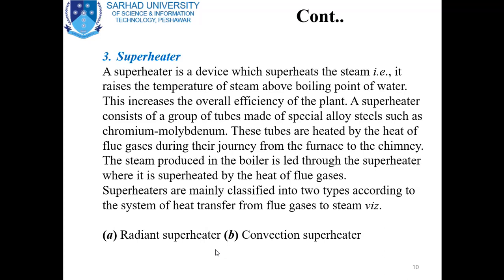A superheater is a device which superheats the steam — it raises the temperature of steam above the boiling point of water. This increases the overall efficiency of the plant. A superheater consists of a group of tubes made of special alloy steel such as chromium and molybdenum. These tubes are heated by the heat of flue gases during their journey from the furnace to the chimney. The steam produced in the boiler is led through the superheater where it is superheated.